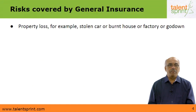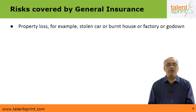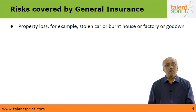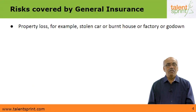Similarly, there could be stolen property, or property that got damaged due to fire, robbery or theft. So the property itself being damaged is called general insurance. It could also be that the factory or godown is burnt down due to an accidental electrical short circuit. Protection from losses against these types of accidents is called general insurance.